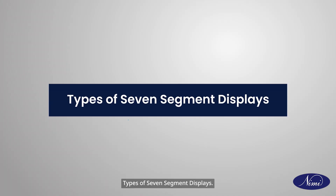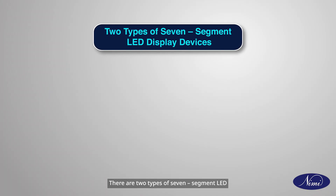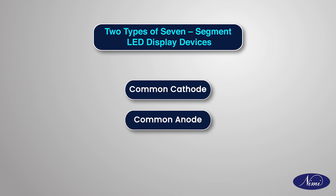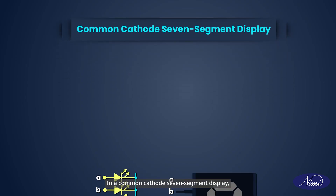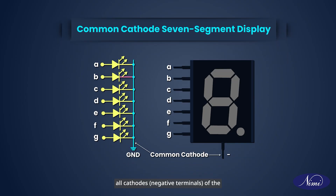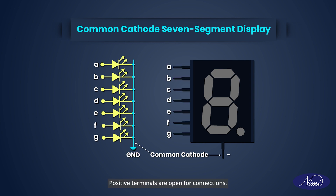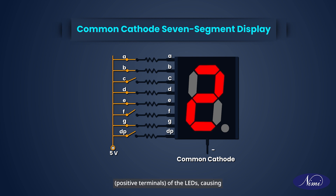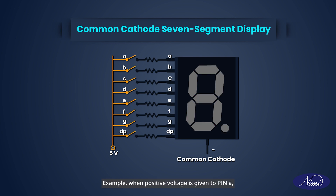Types of seven segment displays. There are two types of seven segment LED display devices: common cathode and common anode. In a common cathode seven segment display, all cathode negative terminals of the light emitting diodes are connected to a common terminal, and the common terminal is connected to ground. Positive terminals are open for connections. To display a digit or number, positive voltage is applied selectively to the anodes, causing the desired segments to light up. When positive voltage is given to pin A, LED A will glow and the rest will be off.